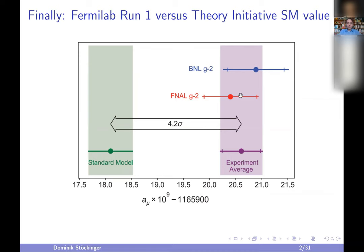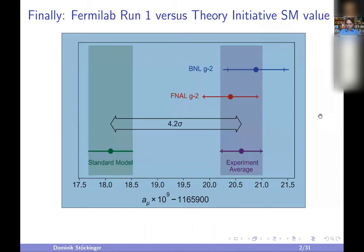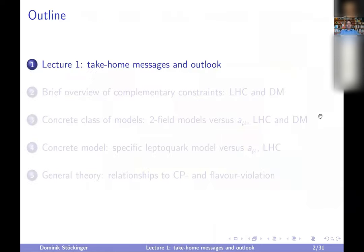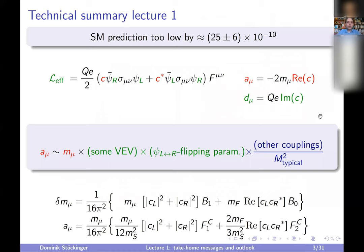Let's very briefly recapitulate the insights that we obtained last time, two weeks ago. We said that the standard model prediction is lower than the experiment by 25 plus minus 6 times 10 to the minus 10, and this is a large contribution because it's larger than the standard model electroweak effects. Therefore, it's not so trivial to explain it in terms of BSM physics.